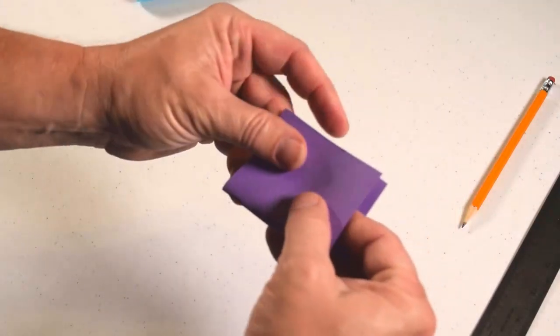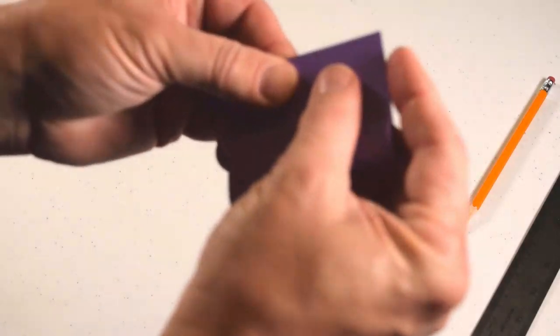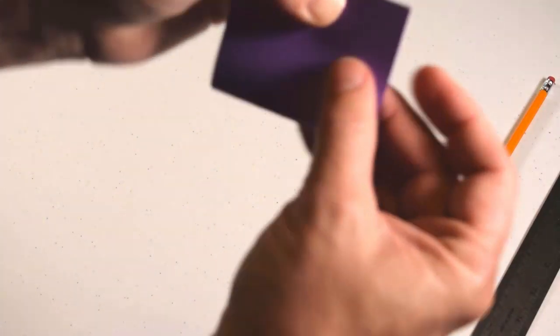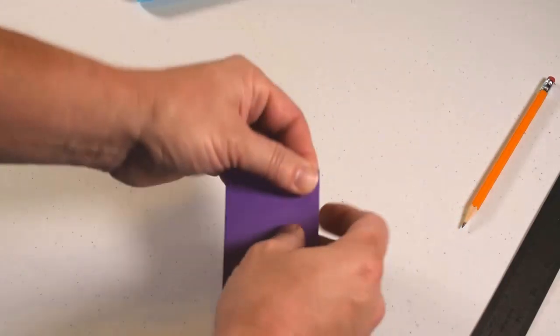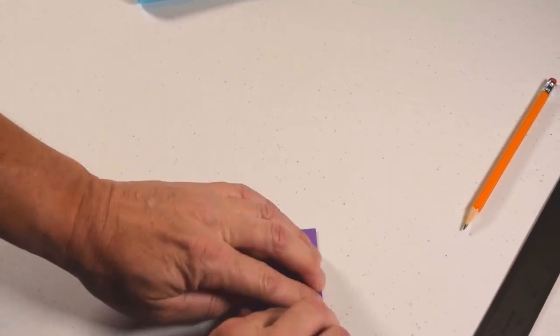Fold it in half. Make sure you really check your edges here to make sure it's even on both sides. And now I'm going to fold down that crease nice and tight.